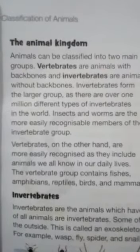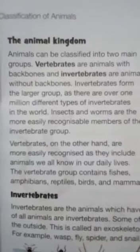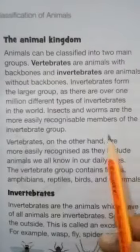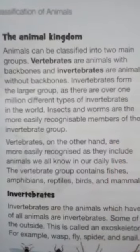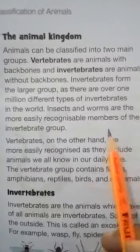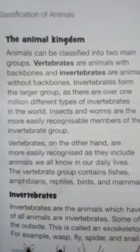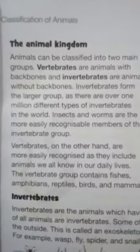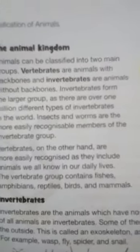Invertebrates are animals that do not have a backbone. The most common examples of invertebrates are worms and insects. Vertebrates include amphibians, reptiles, birds, and mammals.